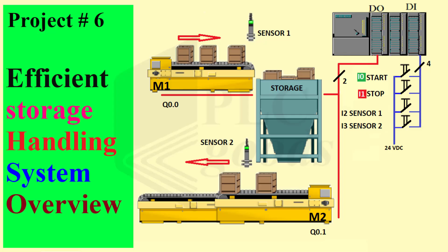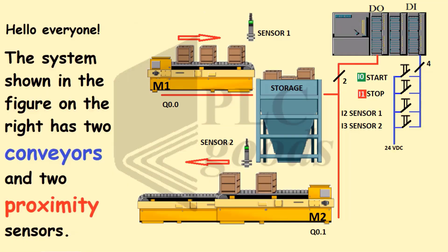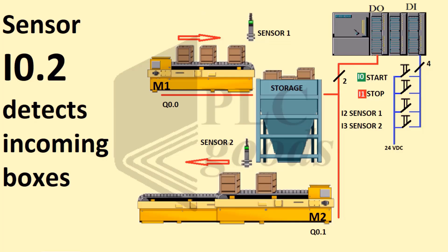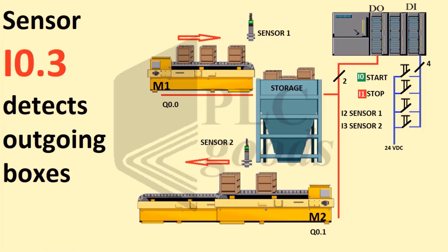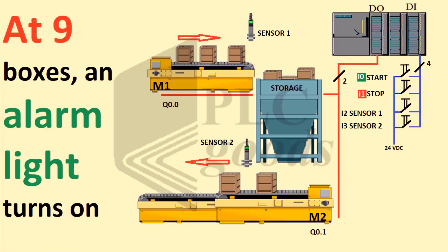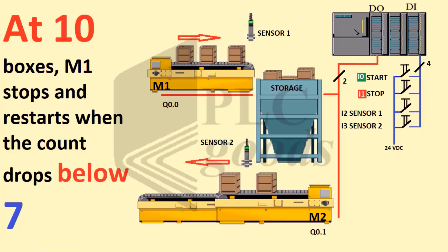Project number six: efficient storage handling system overview. The system has two conveyors and two proximity sensors. When the start button is pressed, M1 and M2 move boxes in and out of storage. Sensor I2 detects incoming boxes, sensor I3 detects outgoing boxes. The content of MW10 tracks the box count. When the count reaches nine, an alarm light turns on, and when it reaches ten, M1 stops.